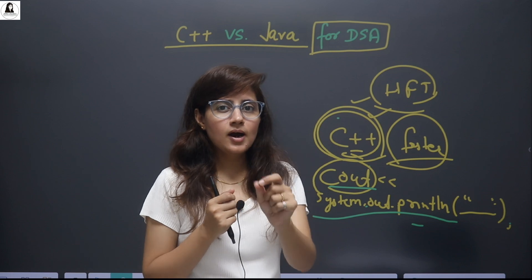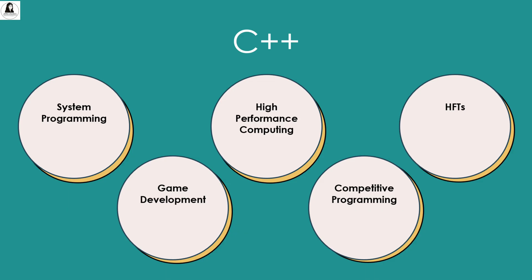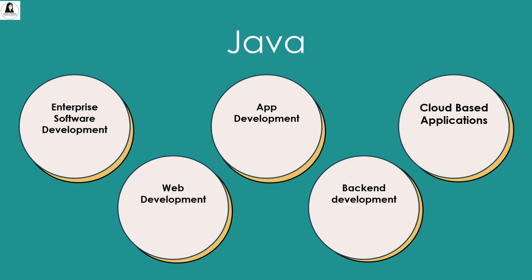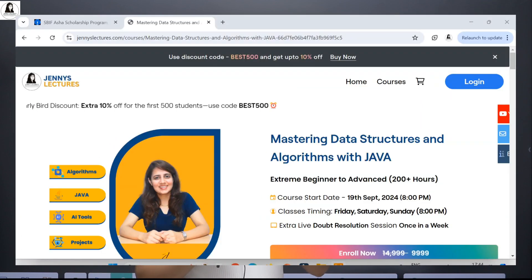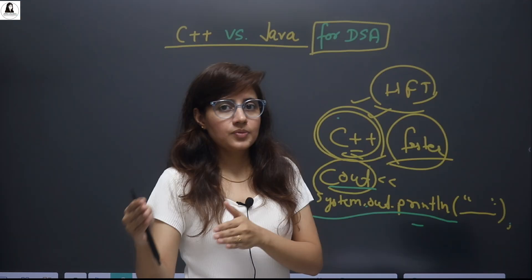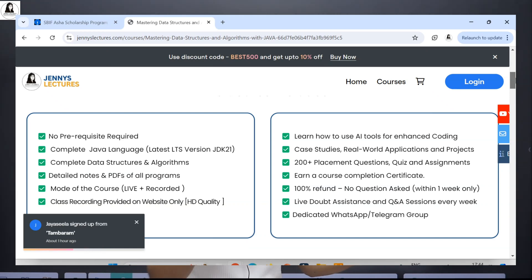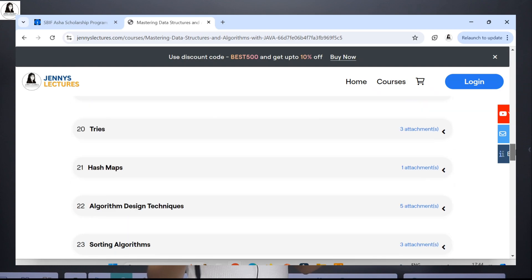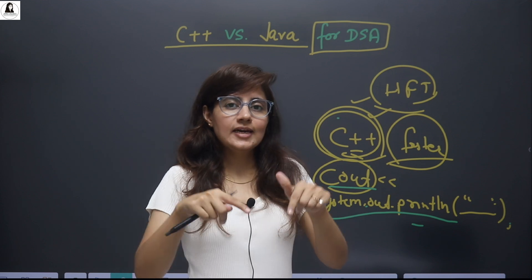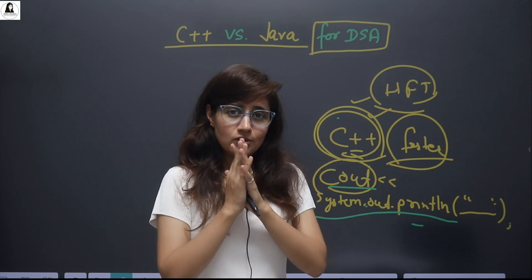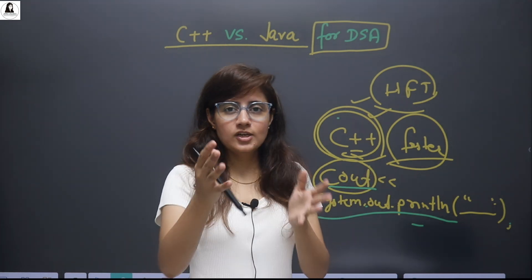To summarize: C++ is in demand in specialized fields like system programming, game development, high-performance computing, and competitive programming. Java is in high demand across multiple industries, especially enterprise software development, web development, and Android app development — it is one of the top languages in terms of job demand. If you want to go for DSA with Java, you can enroll in my course Mastering DSA with Java, where I'll teach complete Java first, then DSA, with projects, case studies, quizzes, and assignments. The early bird offer — extra 10% discount for the first 500 students — is still going on. The enrollment link is in the description box. I hope this video clarified C++ versus Java. See you in the next video. Bye, take care.